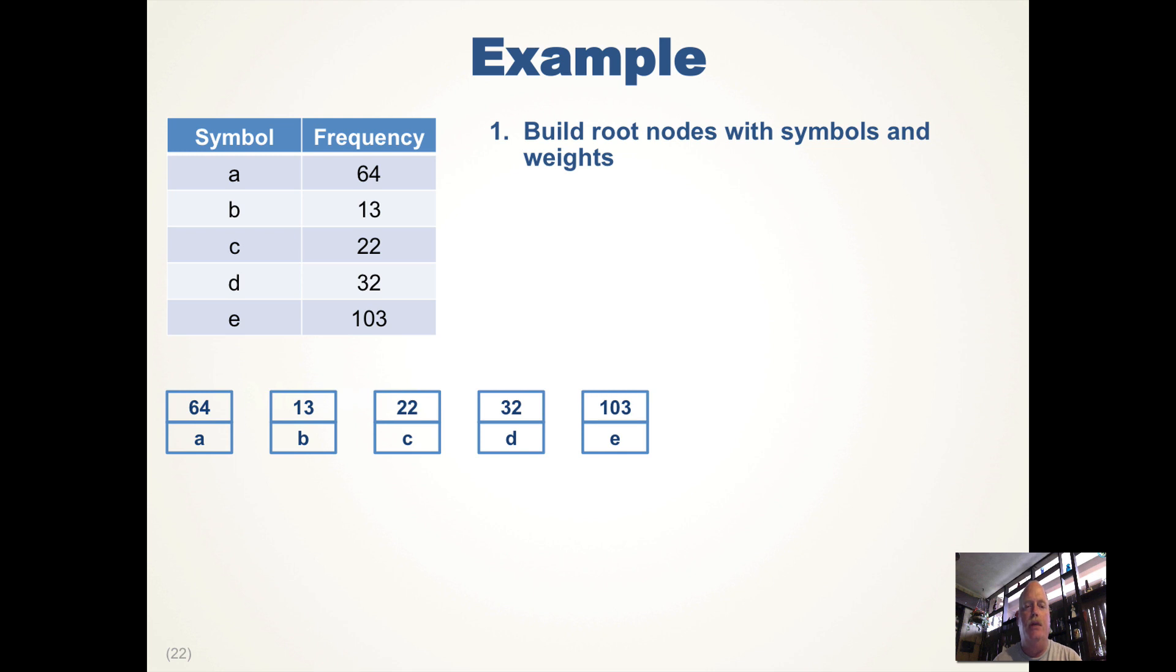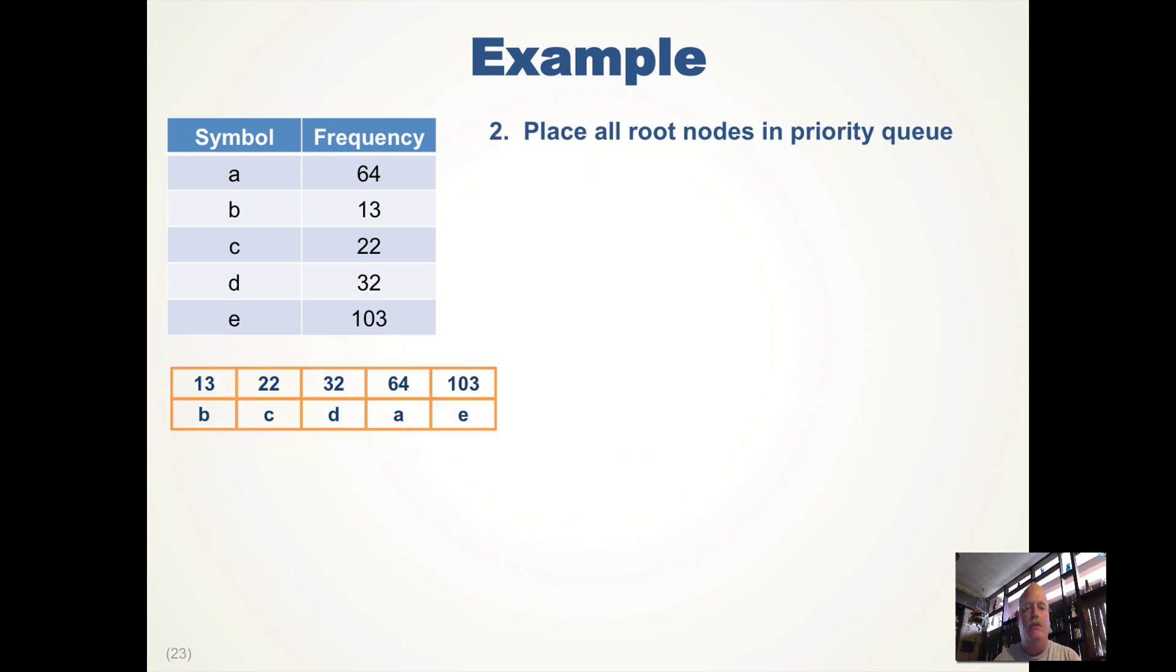Let's do a simple example using ABCDE and the frequencies from the table. We built our root nodes, we stick them into a priority queue, and you notice B is the lowest frequency, so it's the first item in the priority queue.